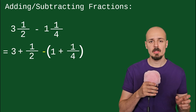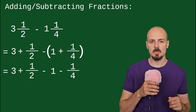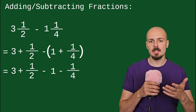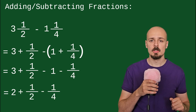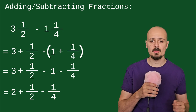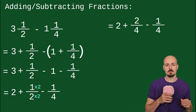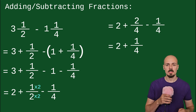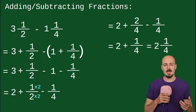Distribute that minus into the bracket and you'll get both terms with a minus in front of them — that's the part people often forget. They'll often add the one quarter instead of subtracting it, so be careful. Now 3 minus 1 is 2, and everything else remains the same. We need a common denominator for our fractions — 2 does go into 4, so we only need to change the first fraction. Multiply both numerator and denominator by 2 to get 2 over 4 minus 1 over 4, giving an answer of 1 fourth. With 2 plus 1 quarter, we end up with 2 and a quarter as our final answer.